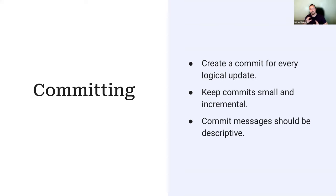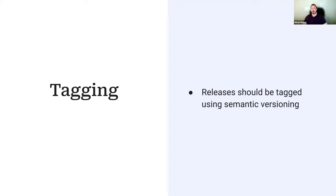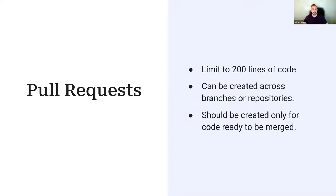Create a branch for every significant feature or bug fix. When you're done and have merged it, delete the branch to keep things clean. Make sure the main branch is for stable production code only. For tagging, releases are typically what you use tags for, and you should use semantic versioning — there's an entire website at semver.org dedicated to it. For pull requests, try to limit code being reviewed to 200 lines at a time to avoid mental fatigue.